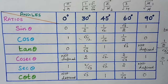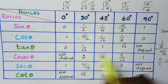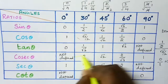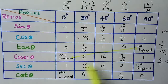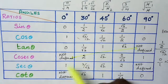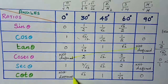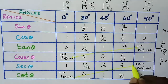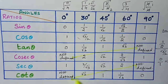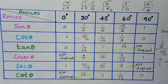Now we have got all the values of the trigonometric table. Here the not defined values appear alternatively end to end. Don't forget to subscribe to our channel and share this video with your friends. Thank you.